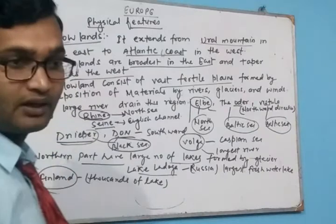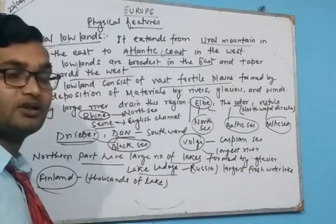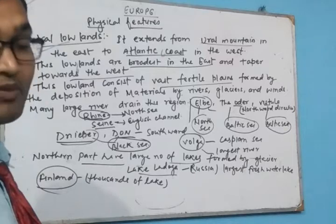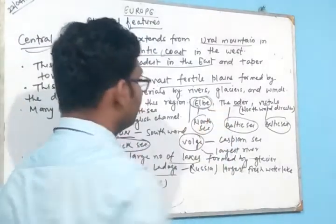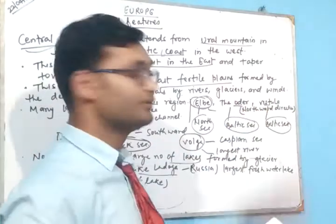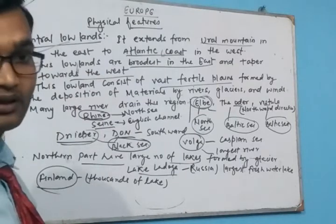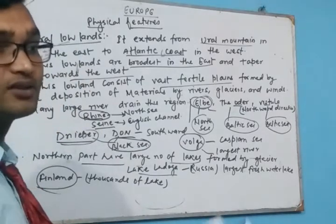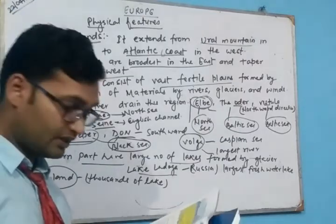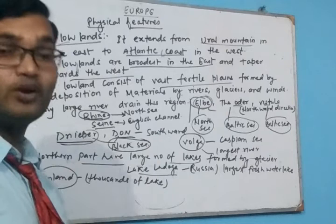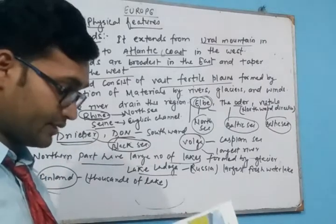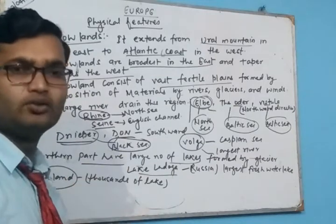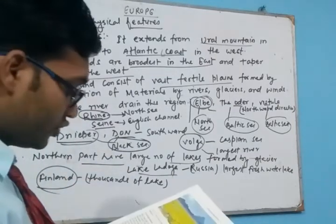In the Tundra region there are some plants: lichen, mosses, and small grasses which grow in the summer season, but in the winter season there is no plantation. To the south of the Tundra region, from about 45 to 60 degrees north latitude, you will see the Taiga region. This Taiga region is cooler than the temperate zone but warmer than Tundra, so some plantation occurs here.